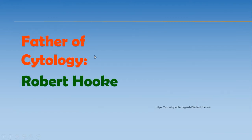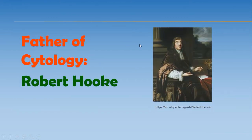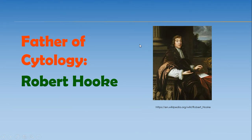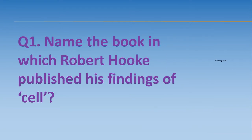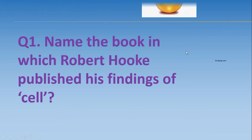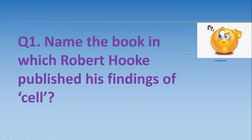The third father is the father of cytology, Robert Hooke. Robert Hooke discovered the cell — specifically he discovered the dead cell from cork tissue. This cell resembled a honeycomb structure. Question number one for you: name the book in which Robert Hooke published his findings of the cell. Write the answer in the comments and I will reply back.